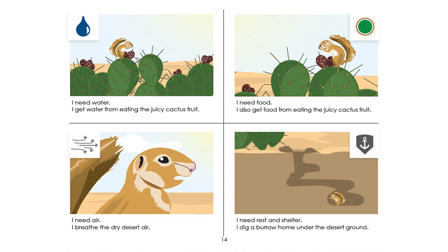I need air — I breathe the dry desert air. Can you point to the nose of the ground squirrel and where it might get air? I need rest and shelter — I dig a burrow home under the desert ground. The ground squirrel digs into the ground to find a place where it can feel safe, rest, and sleep. Let's turn the page down.